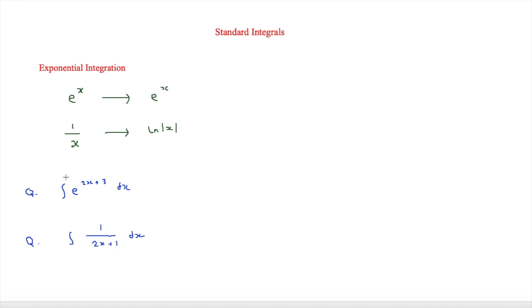We have a couple of questions involving exponential integration. The first asks us to integrate e to the 2x plus 3. To do this we divide by the 2, so instead of multiplying by 2 as we would when differentiating, we get one half e to the 2x plus 3.